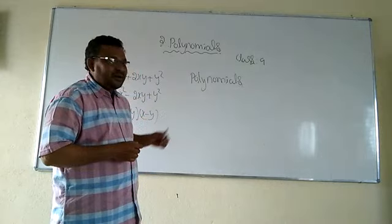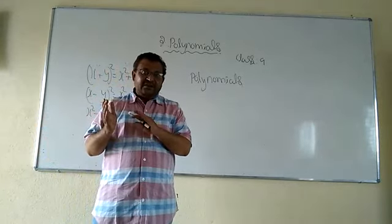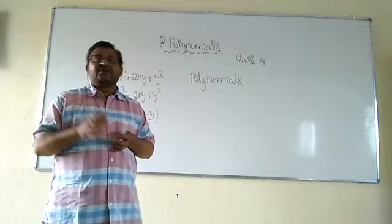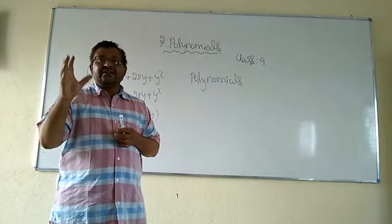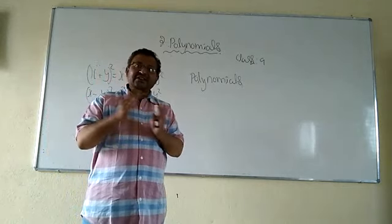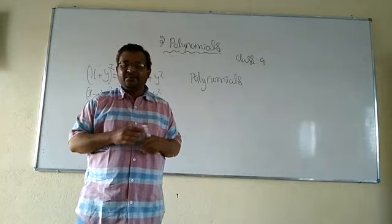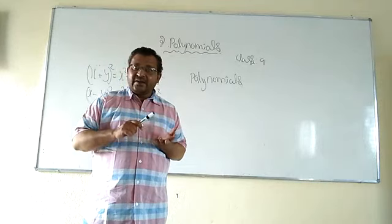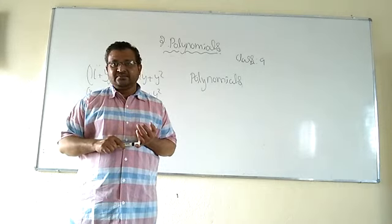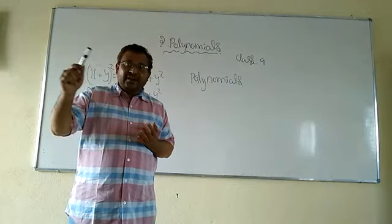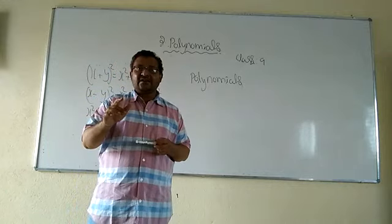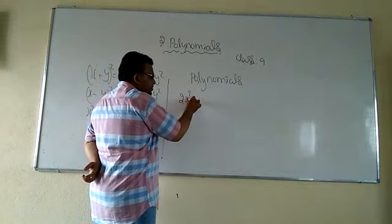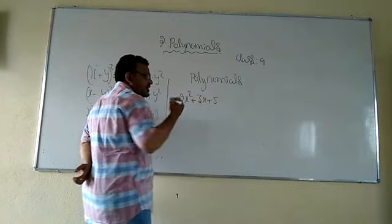Now, polynomial. What is the difference between an algebraic expression and a polynomial? A polynomial is also an algebraic expression only, but it is a particular algebraic expression — that means by some conditions we are making an algebraic expression a polynomial. What are those conditions? If an algebraic expression has power of variable as non-negative integers, then it is called a polynomial. For example: 2x squared plus 3x plus 5 — it is an algebraic expression.